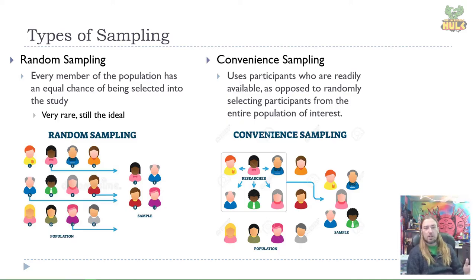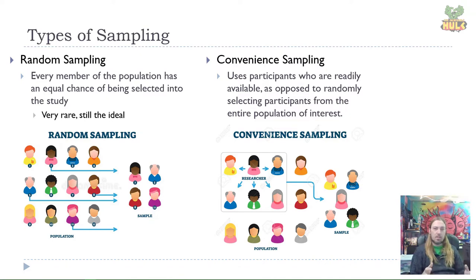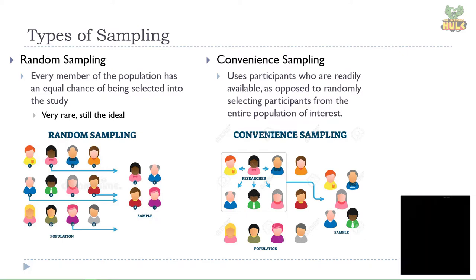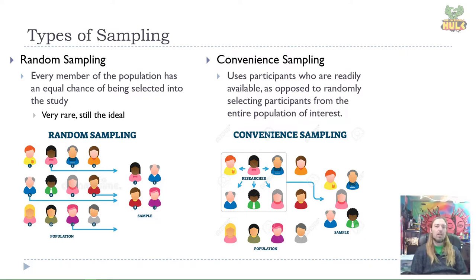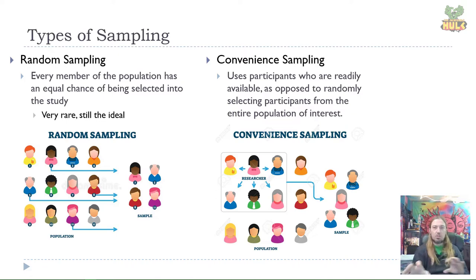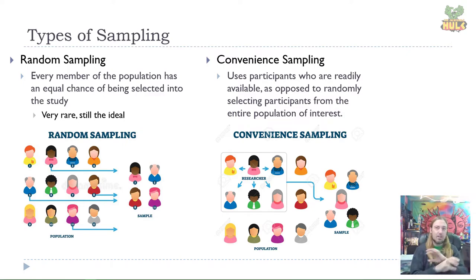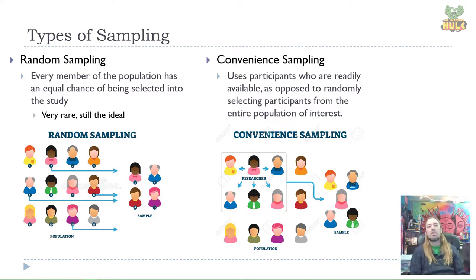That being said, you've got a lot of flexibility depending on what you need and how you need your participants. The best, ideal way is true random sampling. According to true random sampling, every member of the population has an equal chance of being selected into the study. That's ideal because it means there's zero influence on what determines whether someone is in your study — it's entirely random, entirely chance. You can't end up with biased samples where they're all male or all Asian or any particular demographic. The problem, though, is that this is extremely difficult to do.